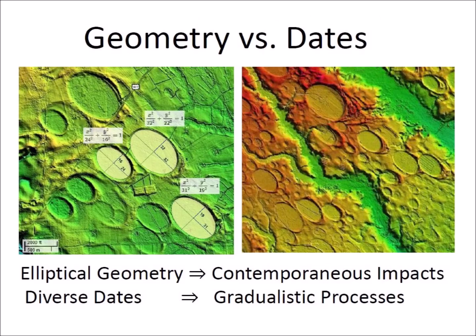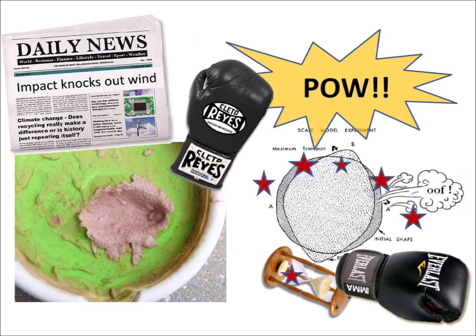You have seen the evidence. Did the geometry convince you that the Carolina Bays were created by impacts? Or did the diverse dates convince you that the bays could not have been created by impacts? This is the dilemma that scientists face today. The dates deny the possibility that the bays were created contemporaneously, but they do not offer an explanation for the regular shape of the bays. The geometry proposes a mechanism of formation for the bays as inclined conical cavities, and claims that the diverse dates are features of the terrain unrelated to the time of placement of the bays. The impact knocked the wind out of the Aeolian hypothesis! Ladies and gentlemen, this match is over! Stay tuned for the championship match!